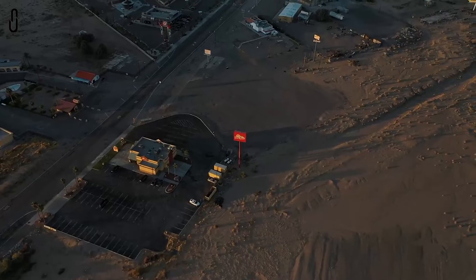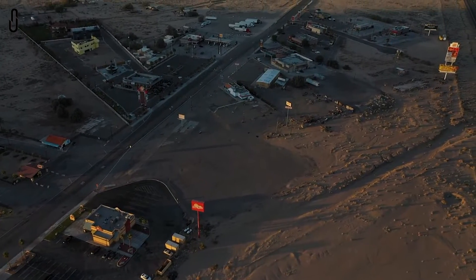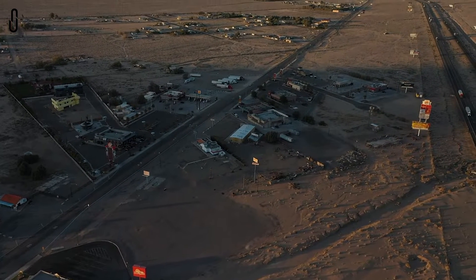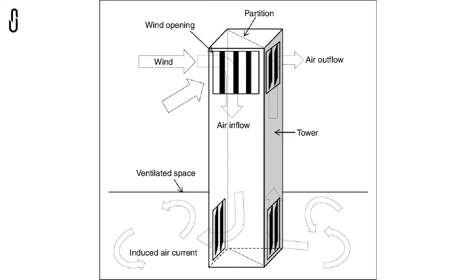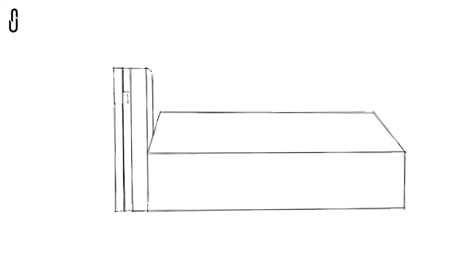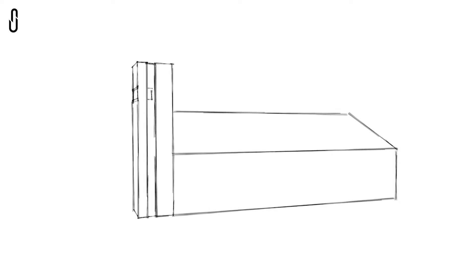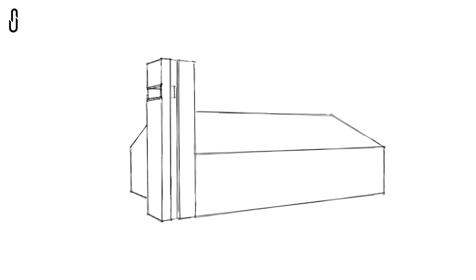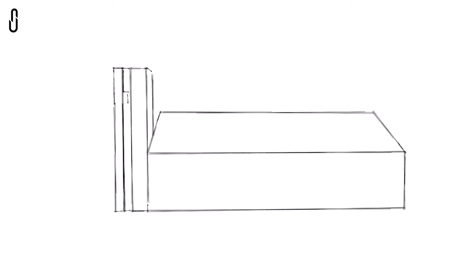Wind catchers are mainly used in hot and humid regions for cooling by using air movement. They are tall, tower-like structures with openings in the front to trap the wind. They trap the wind and direct it down into the building, creating air movement.